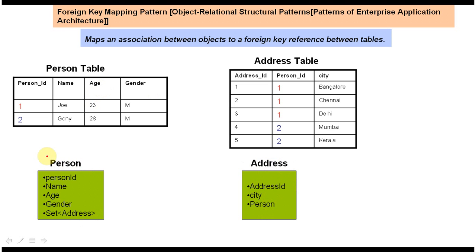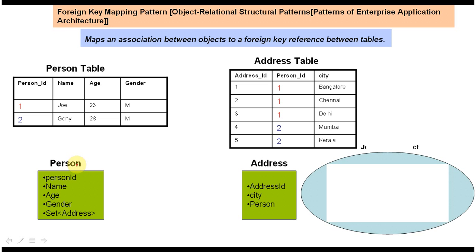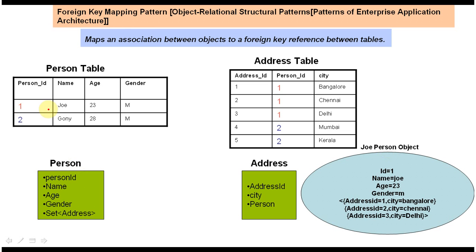If we create an object from the person class, it will look like this. The Joe person object: ID will be one, name will be Joe, age 23, gender male. Joe belongs to three places — address ID 1 city Bangalore, address ID 2 city Chennai, address ID 3 city Delhi. This is Joe's person information and Joe's address information. In this way we can map an association between objects to a foreign key reference between tables.